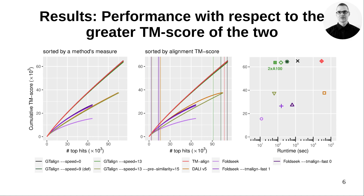Instead, it provides the best superposition constrained to the given alignment. That's entirely different from TM-Align permitted to freely perform superposition search and produce its own alignment. GT-Align configured for the highest sensitivity by option speed provides better accumulated TM-Score, but the difference from TM-Align is not large. This could mean that the majority of alignments for this dataset cannot be improved.